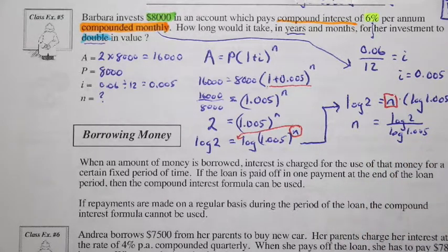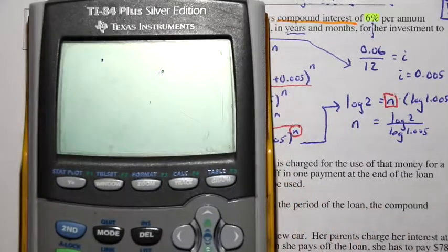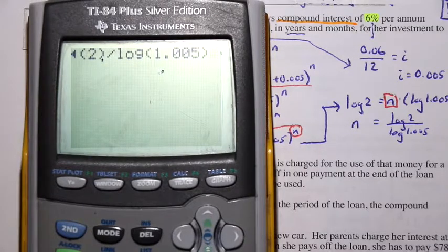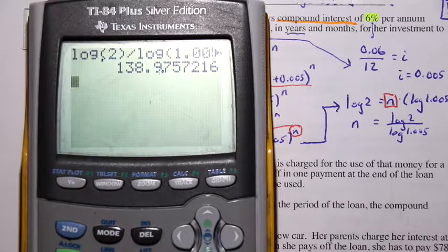And we find out, here we can use a calculator, and say log 2 close bracket divided by log of 1.005 close bracket, and we get 138.97.